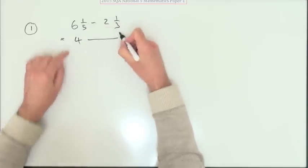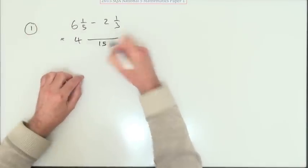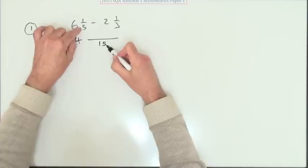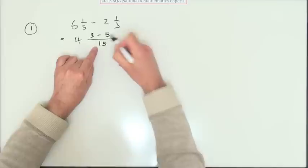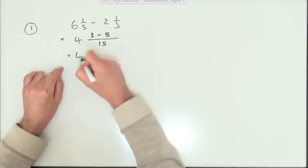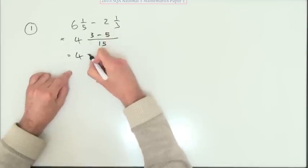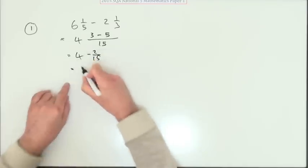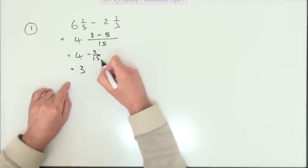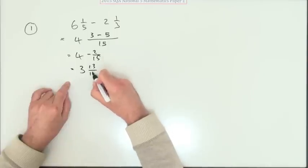Five and three both divide into fifteen, so change them both into fifteenths. That's three times it so that'll be three. That's five times it so that'll be five. And don't let that put you off. Three take away five means you're actually two fifteenths short of four. So that means you've got three and a balance of the fifteen. Three and thirteen fifteenths.